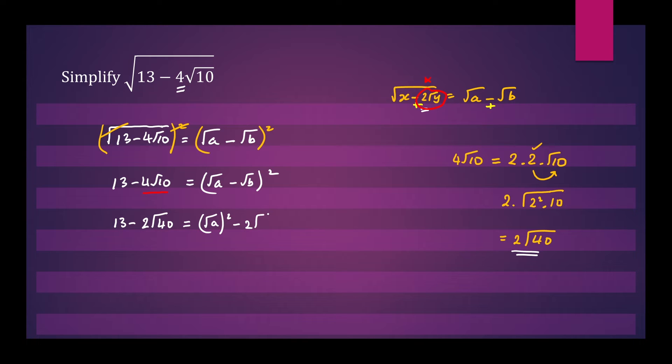Minus 2 times root a times root b plus root b squared. So we'll have 13 minus 2 root 40 equals root a squared is a, root b squared is b. So a plus b minus 2 times square root ab.